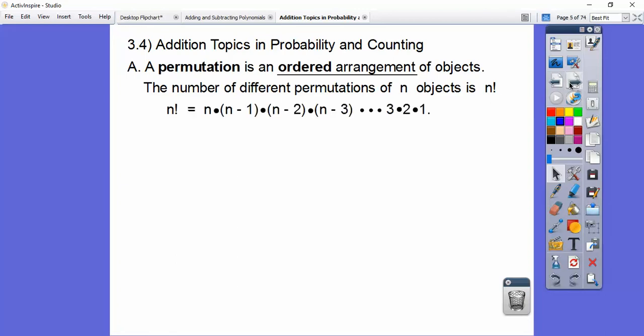N factorial just means whatever the number is, it's that number times one less than that number times one less than that number times one less than that number until we get all the way down to 3, 2, 1.